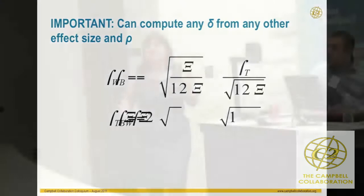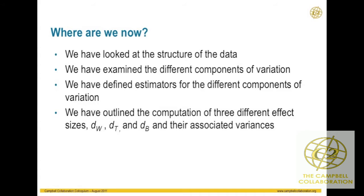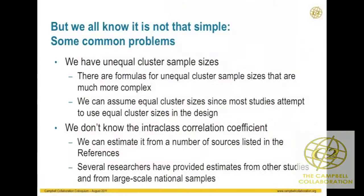Now you may be asking: how do we even find this stuff in practice? We've looked at the structure of the data, seen the different components of variation, defined estimators for the denominator, and outlined the computation of the three effect sizes and their variances. Before giving you examples, note that we often have unequal cluster sample sizes — there are formulas for that, but they're quite complex. So we sometimes assume equal cluster sizes anyway, since that's usually what the primary researcher intended, taking conservative estimates of those sample sizes.